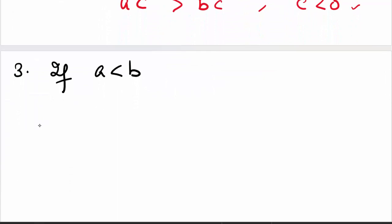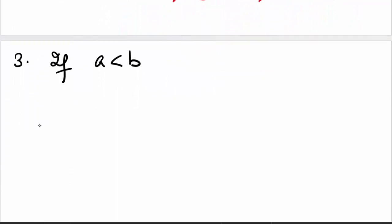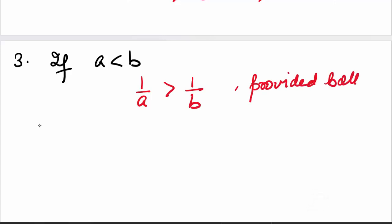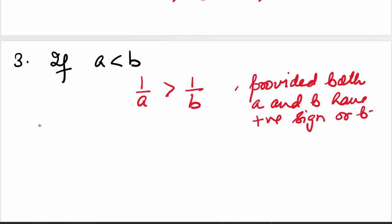Come to the third rule. It says, given A is less than B, if we invert A we get 1/A, and if we invert B we get 1/B. Then the inequality changes, provided both A and B have a positive sign or both have a negative sign. All this will be clear when we do some examples.